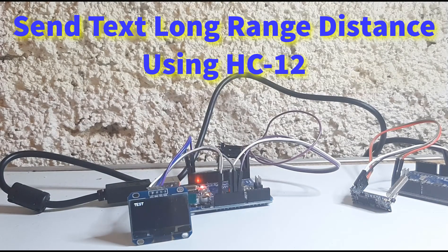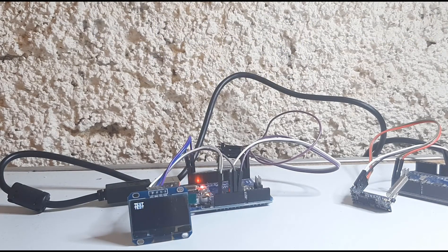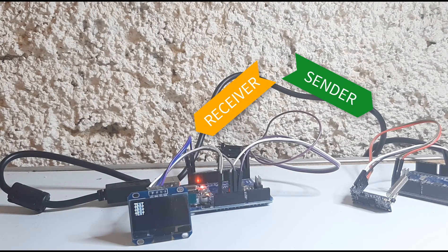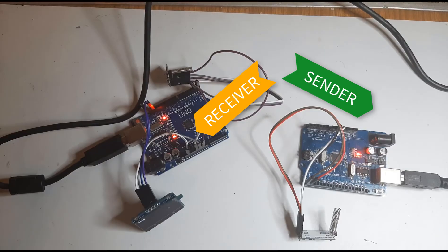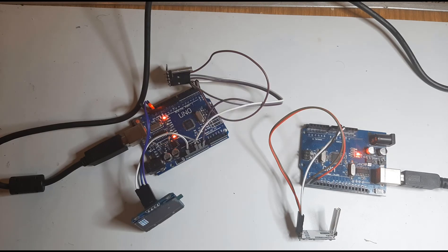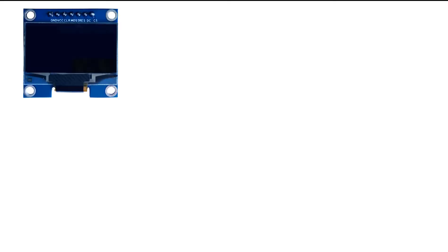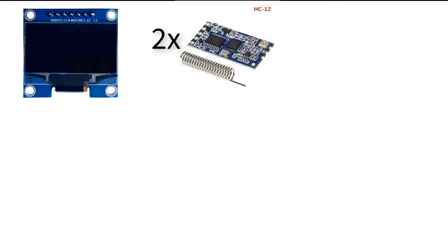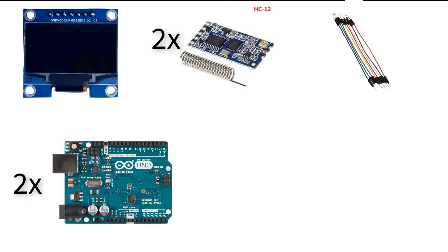In this tutorial we will learn how to send a text over a long distance using a HC-12 module and Arduino. For this project you will need an OLED display, two HC-12 modules, jumper wires, two Arduino boards, and Viswino software.